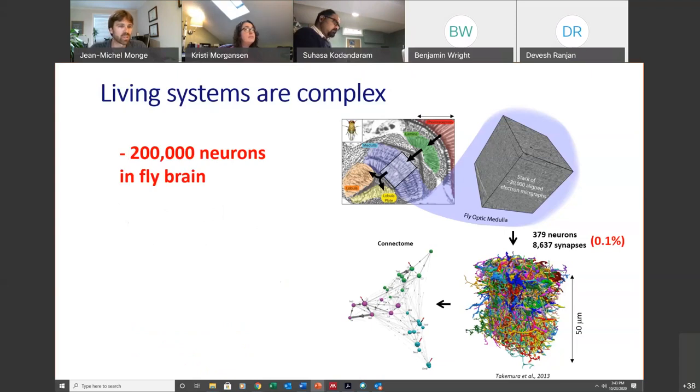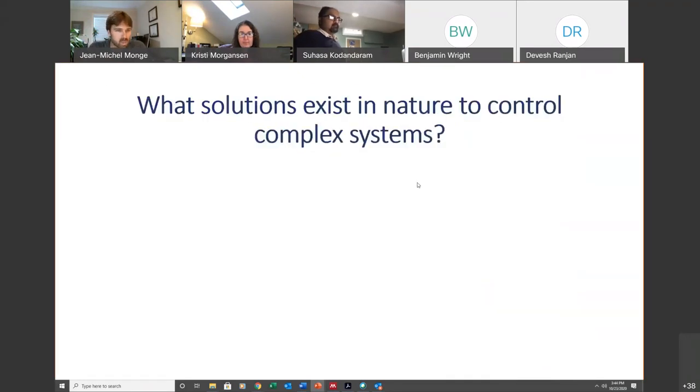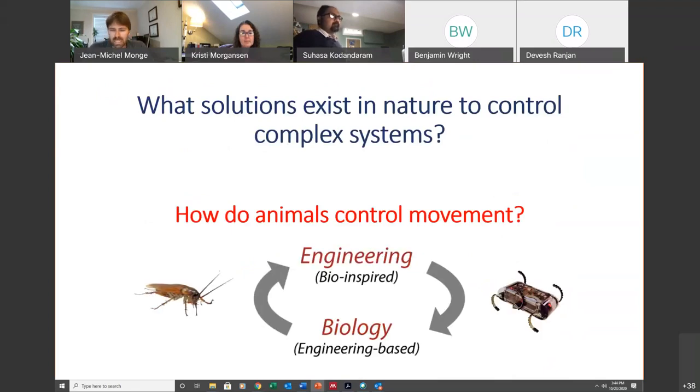On the motor side, the problem is just as challenging. If we look at a cockroach, which has a million neurons in its nervous system, they have 230 muscles. Those 230 muscles actuate 84 different joint motions. So my lab is interested in what solution exists in nature to control complex systems, particularly the complex system of choice is animal locomotion. We work at the interface of biology and engineering.